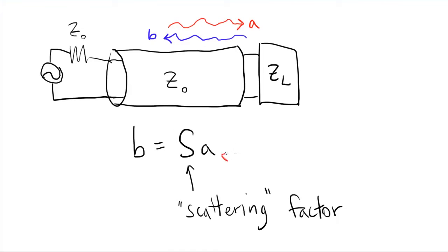So in the case of a matched load, S is going to be 0. For anything else, in general, B, S, and A are actually going to be complex quantities, of course.